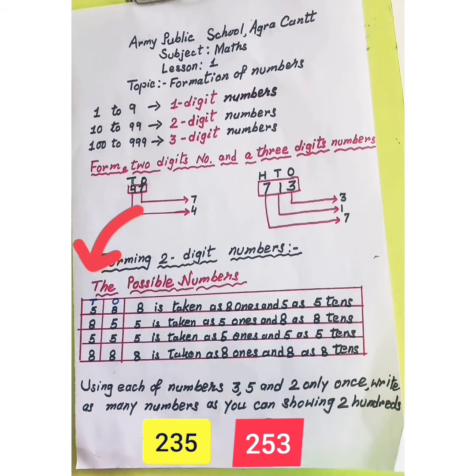Here we place 8 in the ones place and 5 in the tens place. So 8 is taken as 8 ones and 5 as 5 tens, and the number is 58.